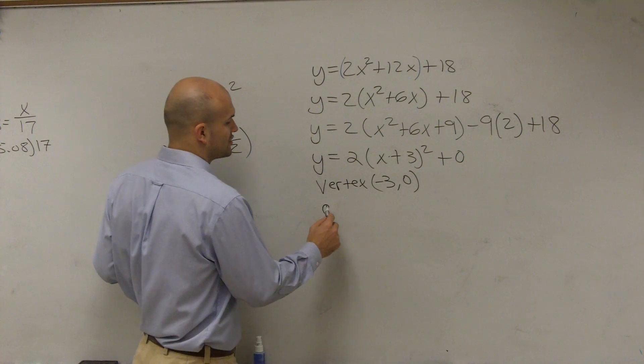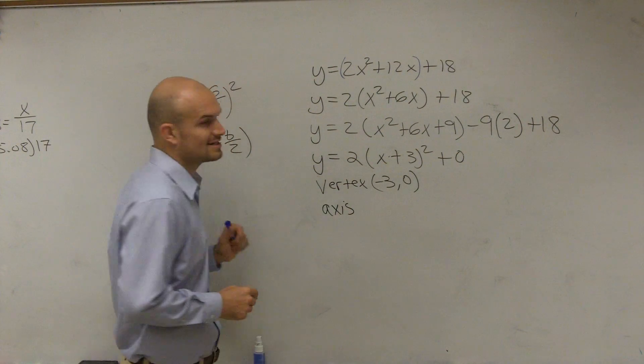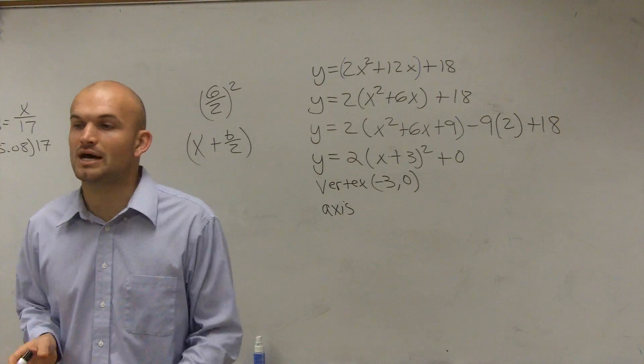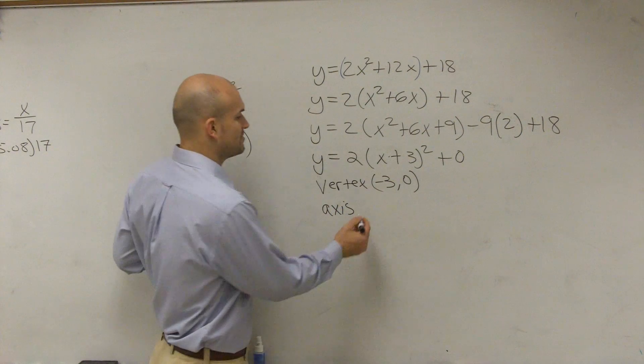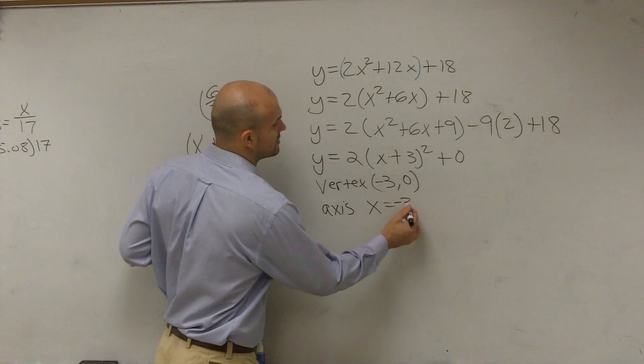Then, we have our axis of symmetry. And remember, the axis of symmetry is going to be the vertical line that your parabola is going to be symmetrical about, which in this case is going to be a vertical line x equals negative 3.